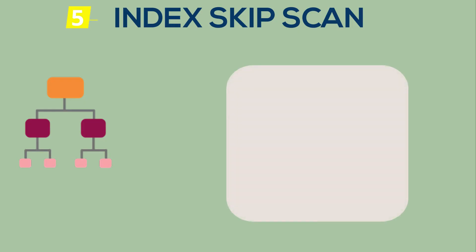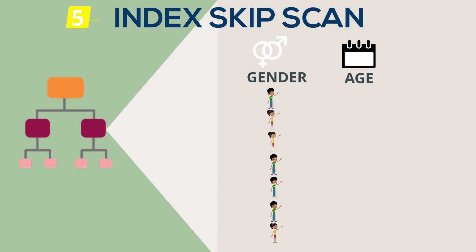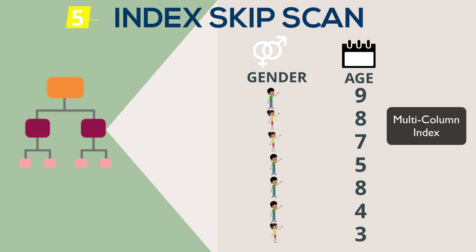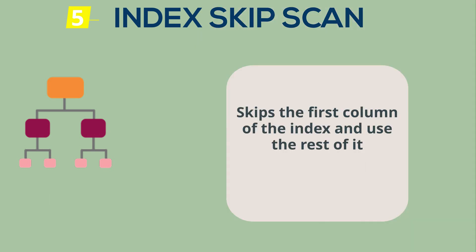An index skip scan is less common — certainly in older versions of Oracle — but from 12c onwards you may see it more frequently. It applies when the where clause predicates include predicates on columns in the index but not the leading column. An index skip scan skips over that first value in the index because the subsequent columns in that multi-column index do have where clause predicates on them and are actually very selective. In other words, there's a high number of distinct values in those subsequent columns, meaning the index can still be very valuable by reducing the number of rows that need to be processed.